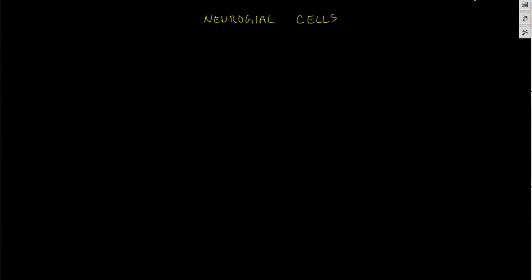All right, this is continuing on the nervous system. This is neuroglial cells. So this is on page two of the handout. The best way to remember all these is just to kind of imagine a picture, so I'll go ahead and draw something out for you guys.